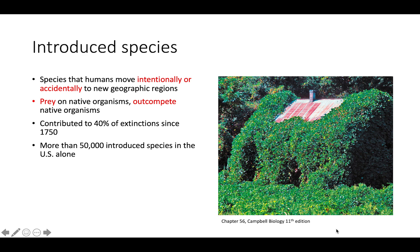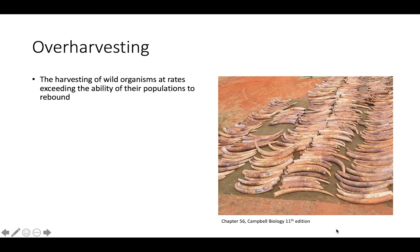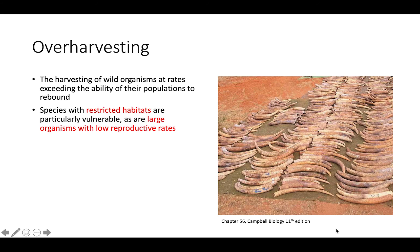We also have over harvesting. Over harvesting is the harvesting of wild organisms at rates that exceed the ability of those populations to rebound through reproducing and increasing in number. Species found in restricted habitats are particularly vulnerable, as are species that are large with low reproductive rates, such as elephants.